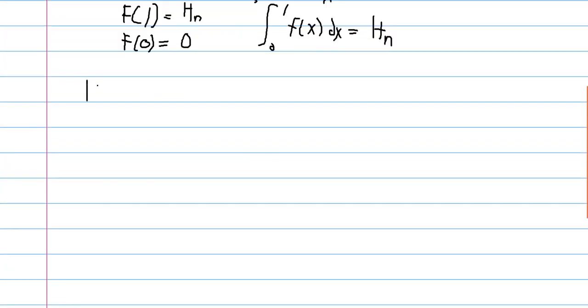And so we get another formula for the harmonic numbers, which is the integral from 0 to 1 of 1 minus x to the n over 1 minus x dx.